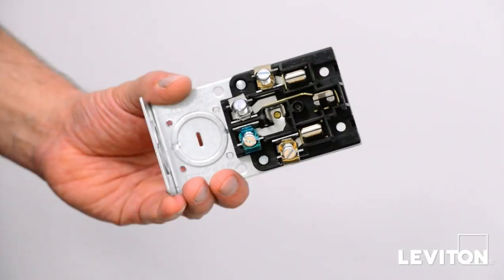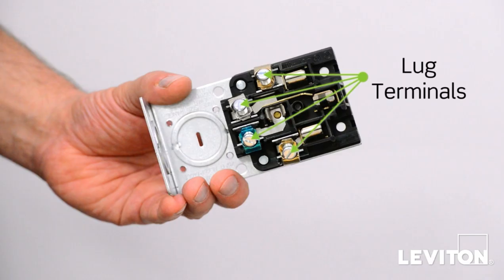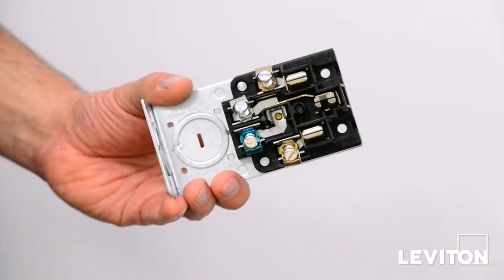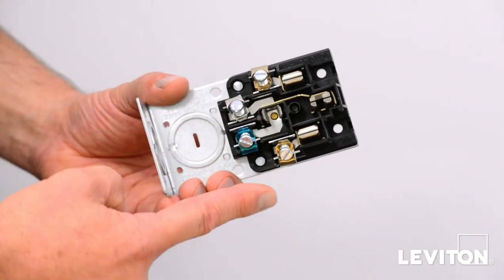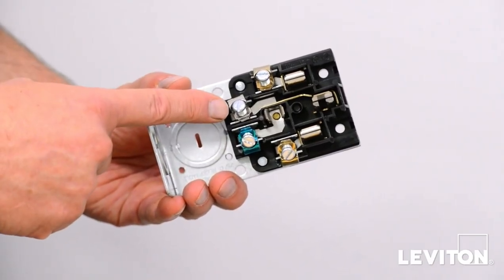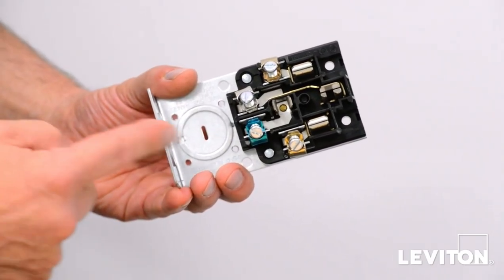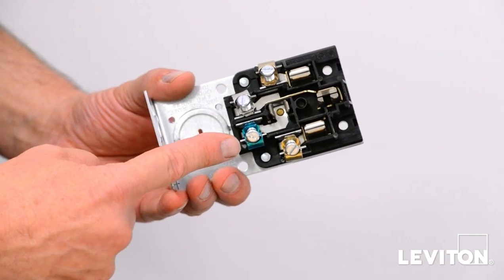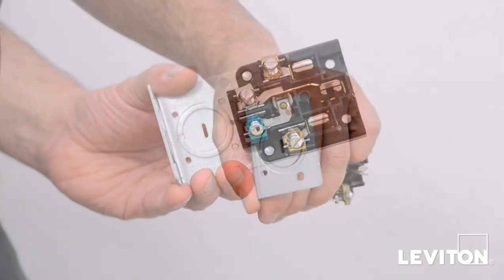The terminals located on the back of this receptacle are referred to as lug terminals. These type of terminals are typically presented on devices that permit a larger size wire gauge conductor. The brass terminals labeled X and Y are for the hot wires. The silver terminal labeled white is for the neutral wire and the green terminal labeled green is for the ground wire.